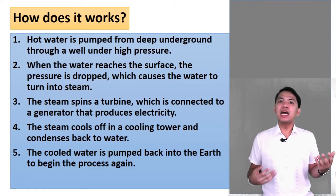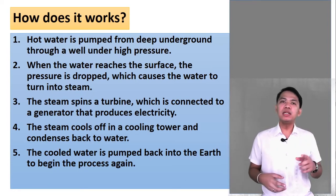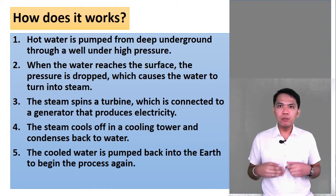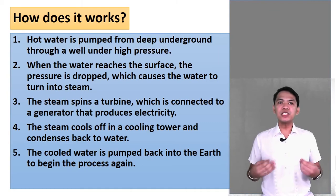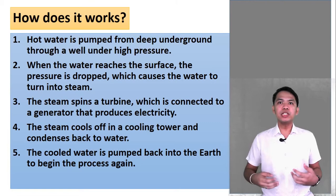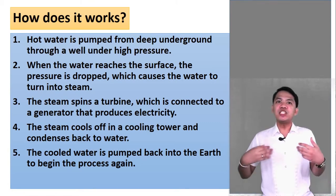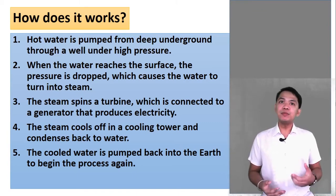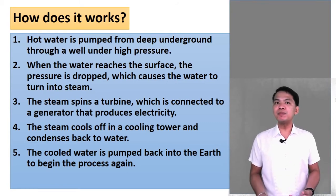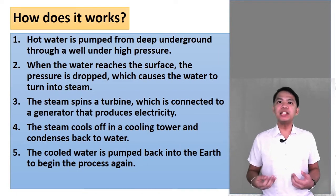Let's further talk about how geothermal power plant works. Number one, hot water is pumped from deep underground through a well under high pressure. When water reaches the surface, the pressure is dropped, which causes the water to turn into steam. The steam spins a turbine, which is connected to a generator that produces electricity. The steam cools off in a cooling tower and condenses back to the water. The cold water is pumped back into the earth to begin the process again.